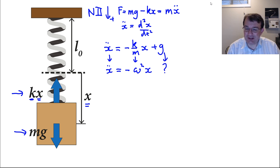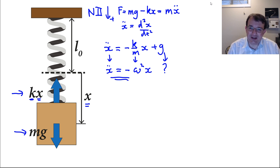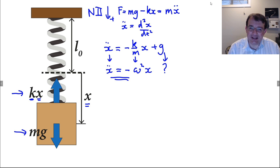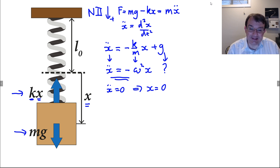Unfortunately there's also this extra constant term +G, and that's messing things up because I know the solutions to the SHO equation but not necessarily to this modified one. To understand where we went off the rails, let's look at the general SHO equation: Ẍ = -constant × X. That tells me that when Ẍ = 0, X must also be 0. But that's not going to be the case with the way I've chosen X here.